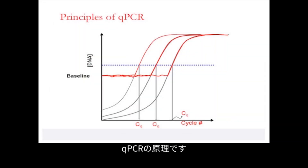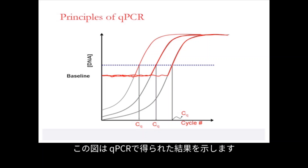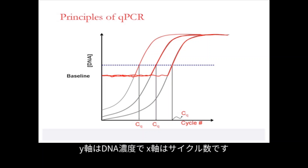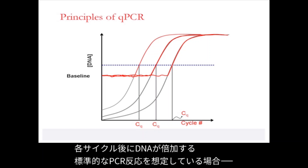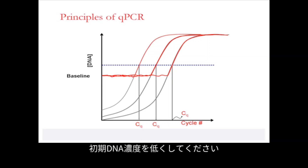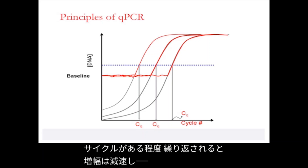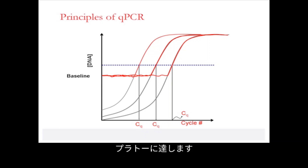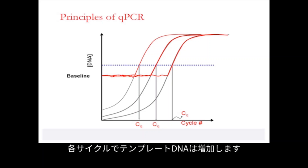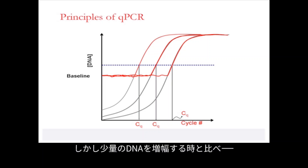This slide shows the principle of qPCR. The results obtained are expressed in a chart where the y-axis is the DNA concentration and the x-axis represents the cycle. In a standard PCR reaction with doubling of DNA after each cycle, a low initial DNA concentration leads to exponential amplification, which eventually reaches a plateau. With a high DNA concentration, we again see an increase of template DNA with each cycle; however, the plateau is reached much sooner compared to amplifying a smaller amount of DNA.